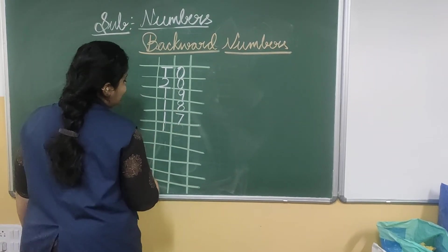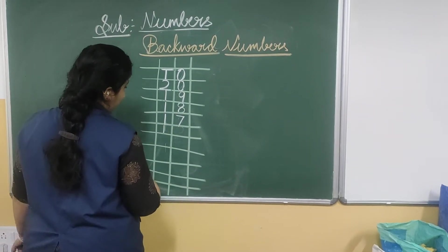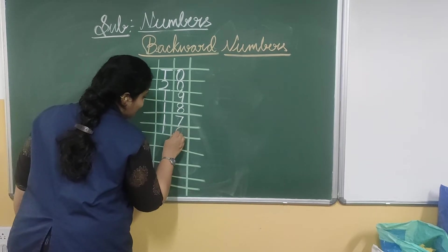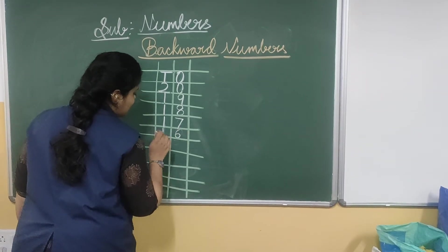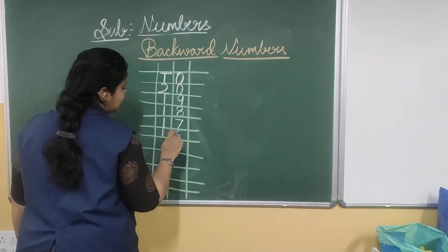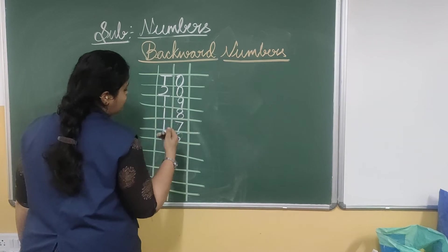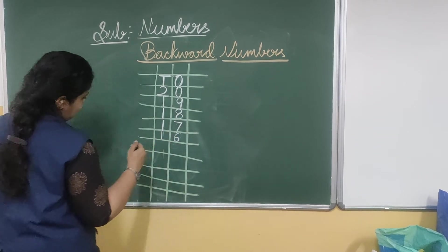So write 1 under the 10's place. And 7 before it is 6. That is 1, 6 — 16. So 17 before is 16.